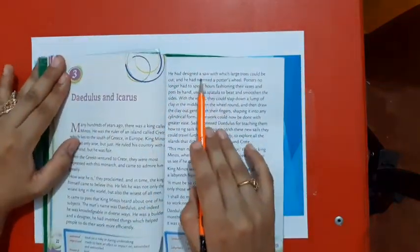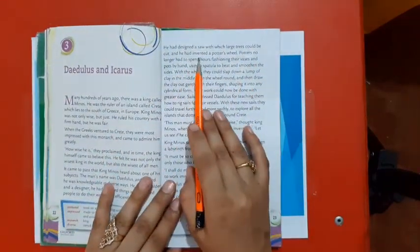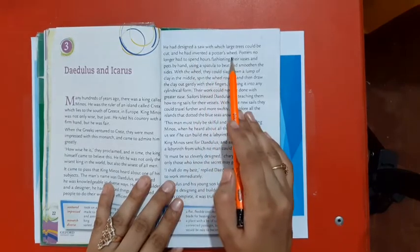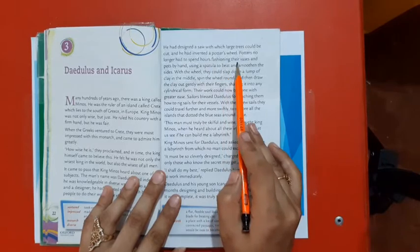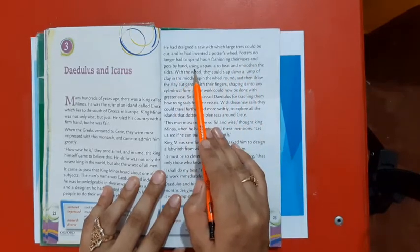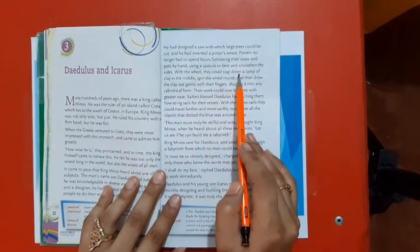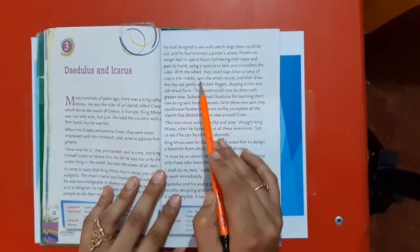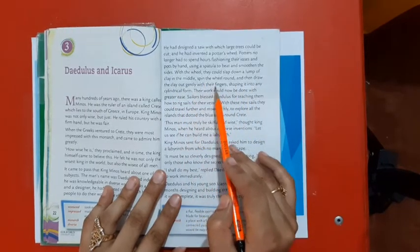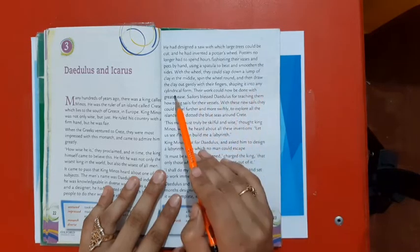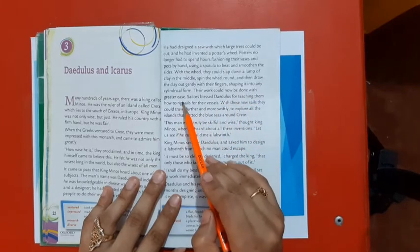He had designed a saw with which large trees could be cut, and he had invented a potter's wheel. Potters no longer had to spend hours fashioning their vases and pots by hand using a spatula to beat and smoothen the sides. With the wheel, they could slap down a lump of clay in the middle, spin the wheel round, and then draw the clay out gently with their fingers, shaping it into any cylindrical form.